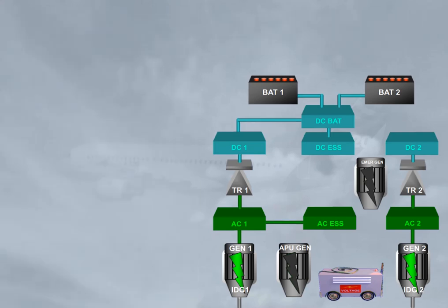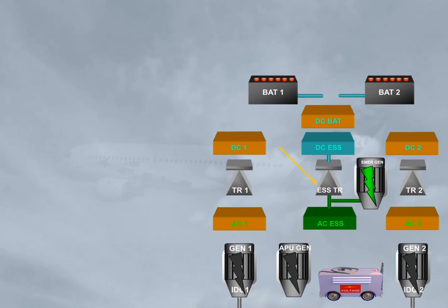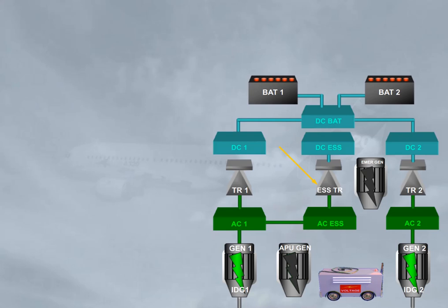The electrical system also has an essential transformer rectifier, essential TR. The essential TR can power the DC essential bus from the emergency generator in case of severe electrical failure, or from the AC essential bus in case of a TR1 or TR2 failure. In that case, DC bus 1 or 2 is transferred to DC bus 2 or 1 via the DC BAT bus.